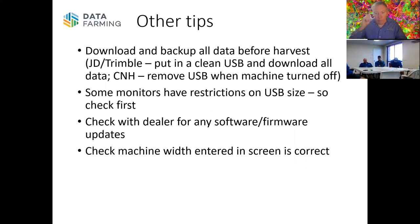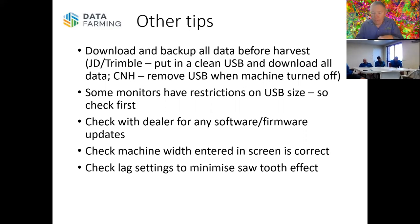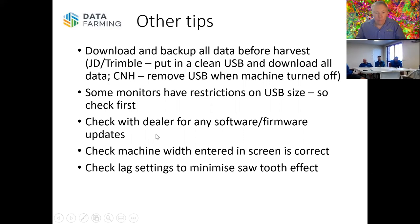People get stuck particularly in the south when switching between a swathing front and a harvesting front — that's where I see most problems occur with incorrect width settings. There's also a lag setting built into the machine to try to line up the data to account for the grain flow delay, which can be up to 50 metres. If that's set incorrectly — it's around seven seconds from memory — you'll get a sawtooth effect as you go up and back in the paddock because of that lag. If you see sawtoothing in the data going backwards and forwards, that's probably because the lag setting isn't correct.